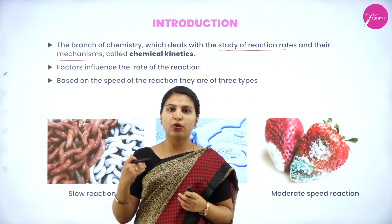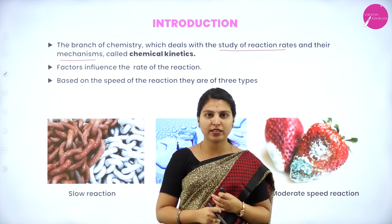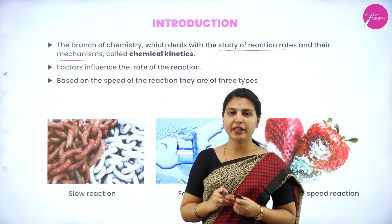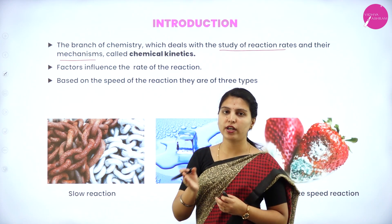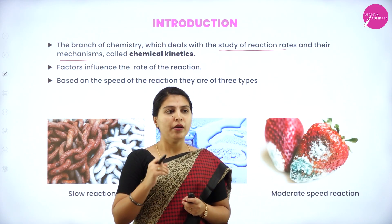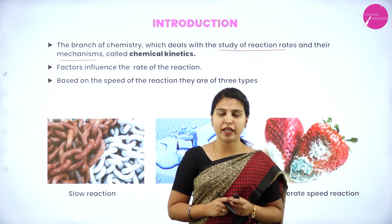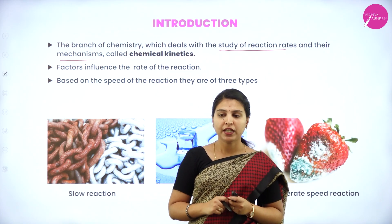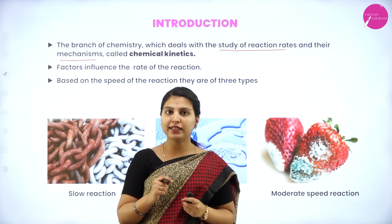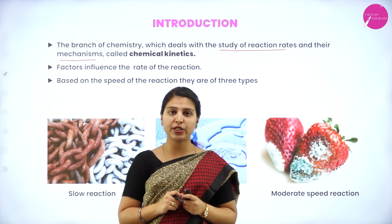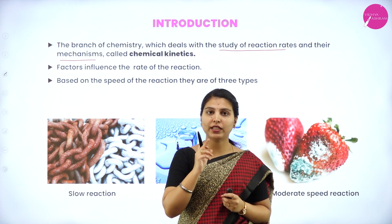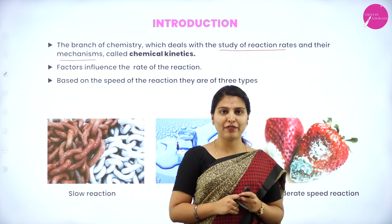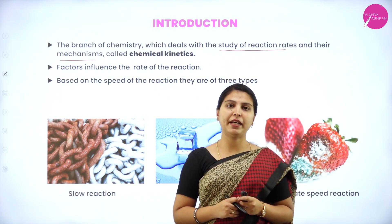A slow reaction happens very slowly, like corrosion or rusting of iron. A fast reaction occurs quickly, like melting of ice. A moderate reaction has speed that is neither very fast nor very slow. From an economical perspective, many industries change the speed of reaction because some reactions take a long time. By understanding the optimum conditions and factors affecting the rate of reaction, we can change the speed without changing the steps or mechanisms of the reaction. This is one application of chemical kinetics.